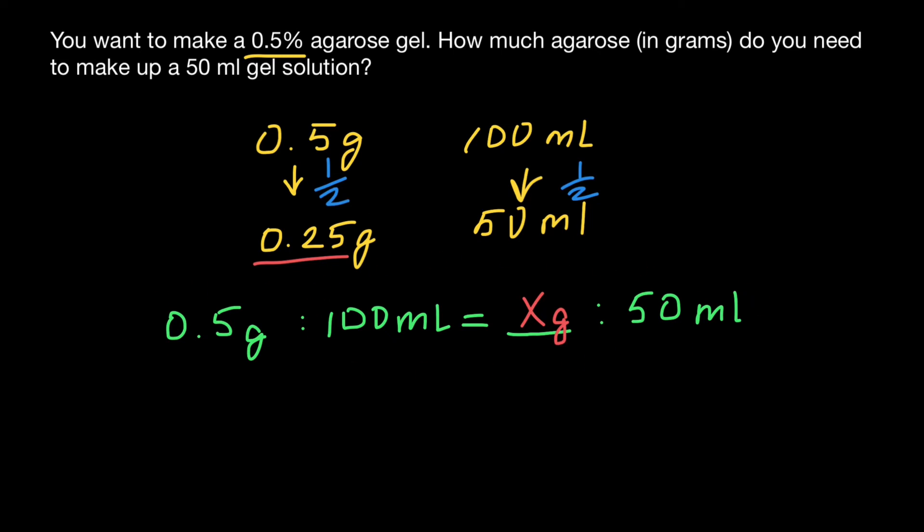So mathematically, we just move all the known numbers to one side. And what we're going to have is 0.5 grams divided by 100 milliliters times 50 milliliters.